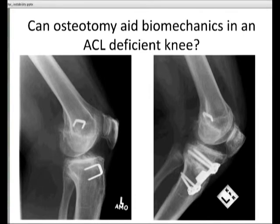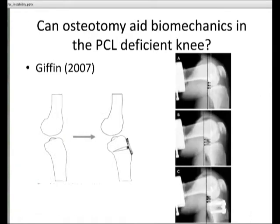Moving on to osteotomy for the ACL-deficient knee — this is one of the first real studies looking at osteotomy for ACL deficiency. They looked at 41 double and triple varus knees — those with either lateral ligamentous instability or lateral combined external rotation. They performed a staged closing wedge osteotomy and then went on to perform ACL reconstruction. They noted a reduction in pain in 71% and a reduction in giving way in 85% after the initial osteotomy.